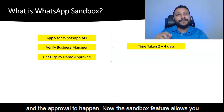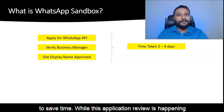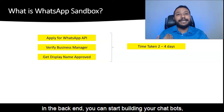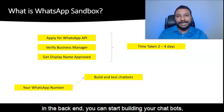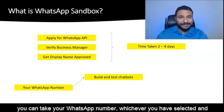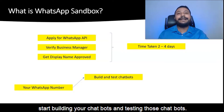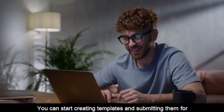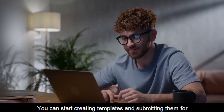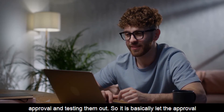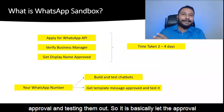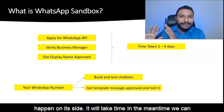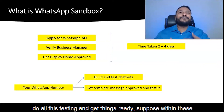This takes time. In a normal scenario it will take at least two to four days for the manual review and approval to happen. The sandbox feature allows you to save time — while this application review is happening in the backend, you can start building your chatbots. You can take your WhatsApp number that you've selected and start building and testing those chatbots. You can start creating templates and submitting them for approval and testing them out.